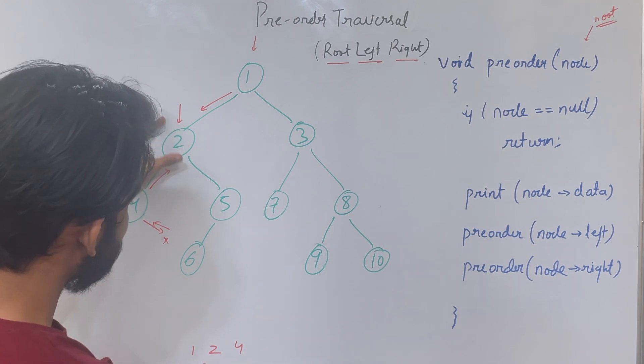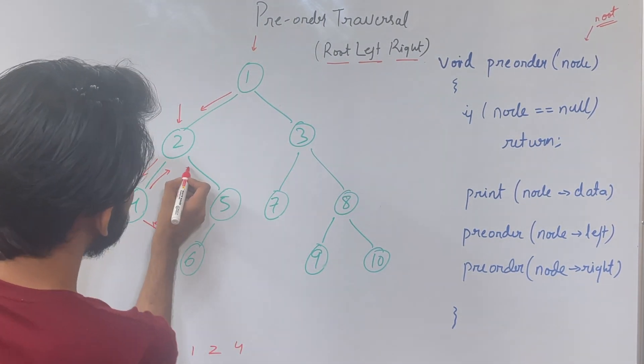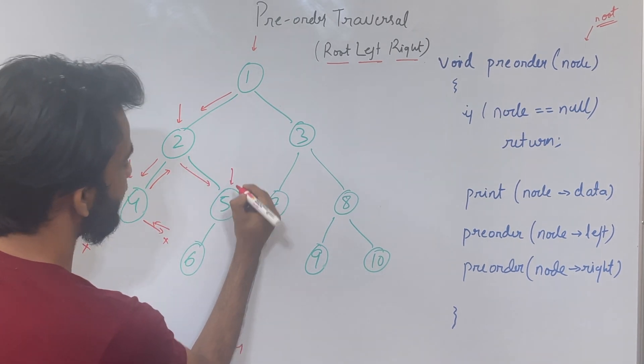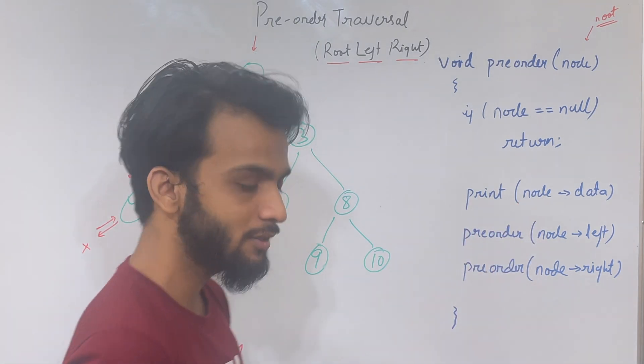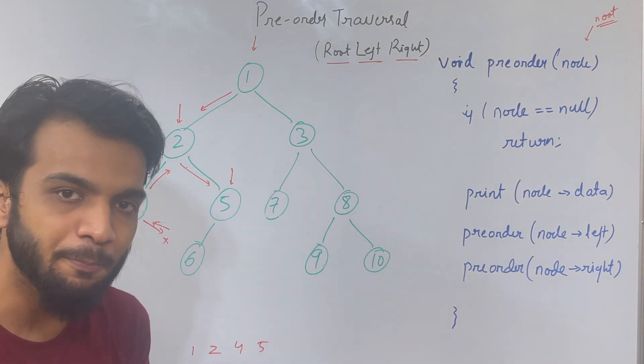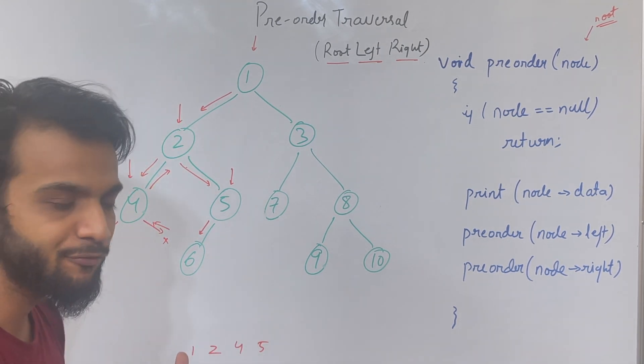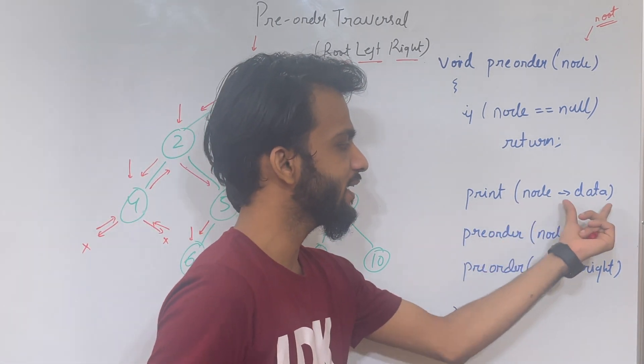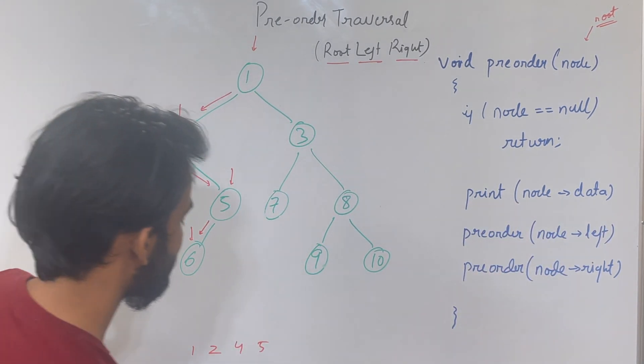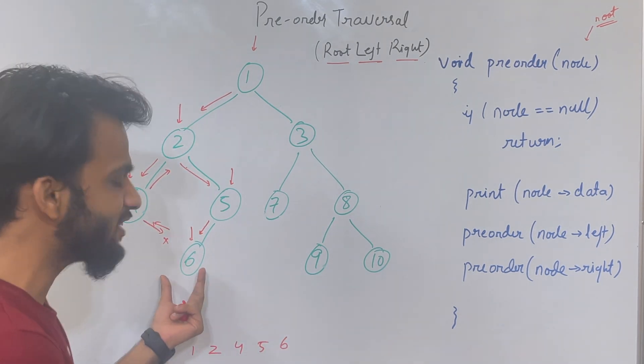For node 2, print is done, left is done. Time to go to the right. We go to the right and stand at node 5. For the new node 5, again print, so we print 5. Once we've printed 5, we go to the left. Currently at node 6, we print node.data, so we print 6.